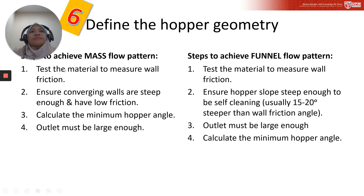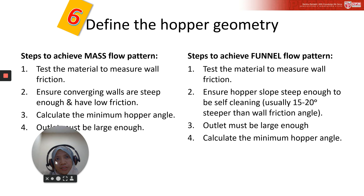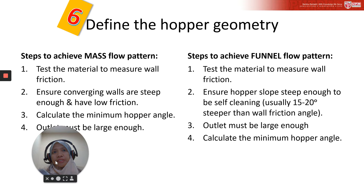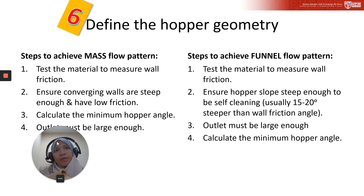The steps to achieve mass flow pattern: it is essential to ensure that the converging hopper section is steep enough and the wall surface friction is low enough to facilitate solids flow without stagnant regions whenever solids are withdrawn. The first step is to test the material to measure the wall friction, then calculate the minimum hopper angle.